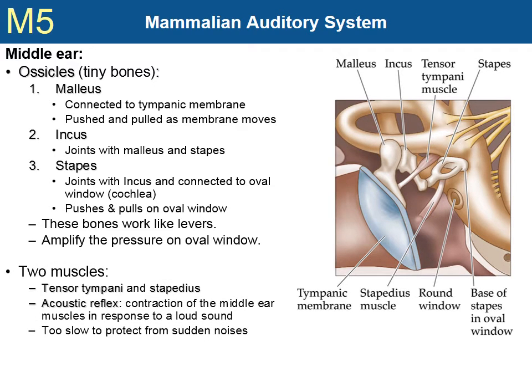The two muscles are the tensor tympani and the stapedius muscles. When loud sound is heard — that is, when the tympanic membrane moves a lot — these muscles contract, reducing the amount of movement of the ossicles. This protective action, however, does not work for sudden loud sounds like gunshots, since the shot is heard before the reflex could react.